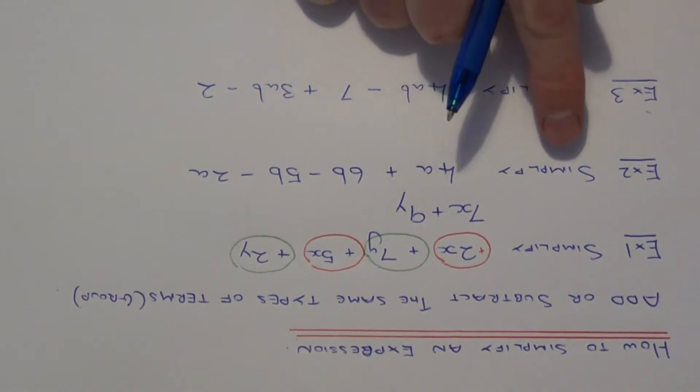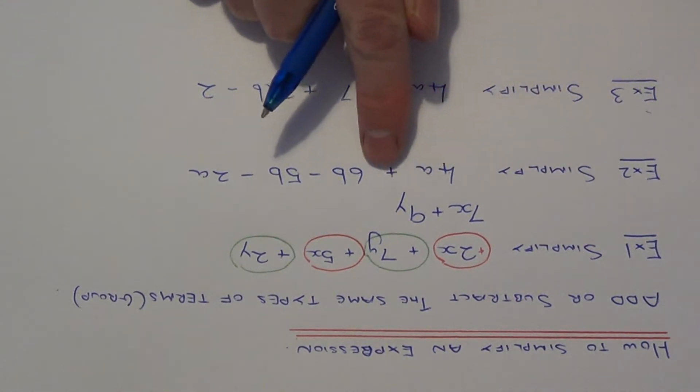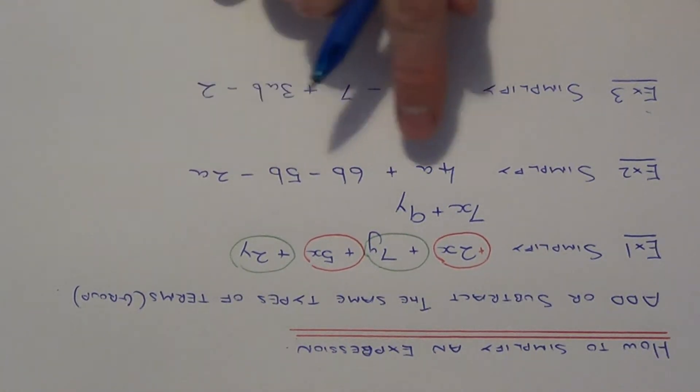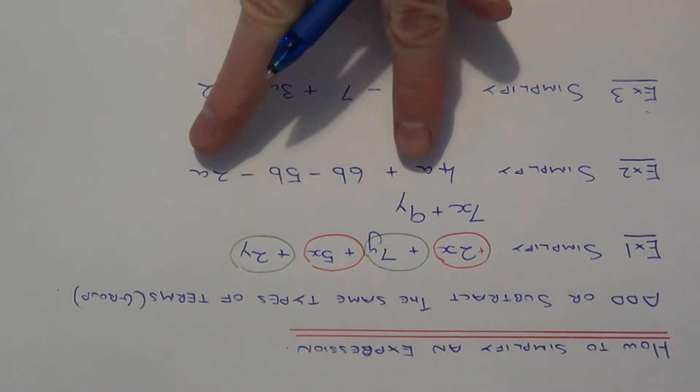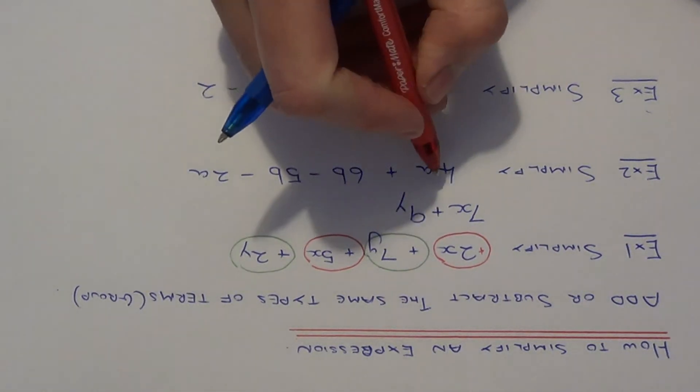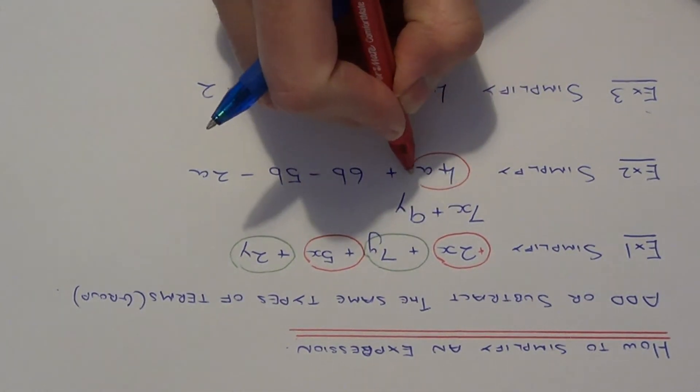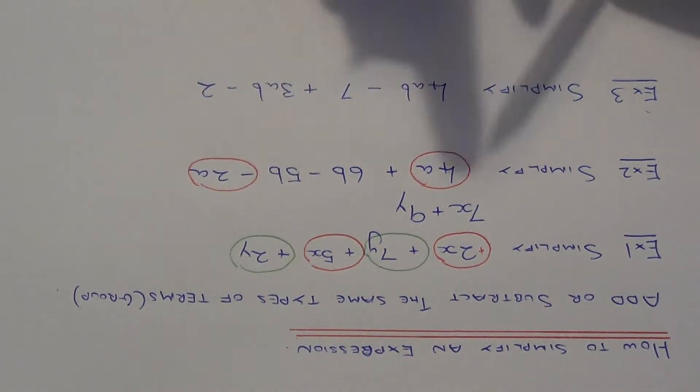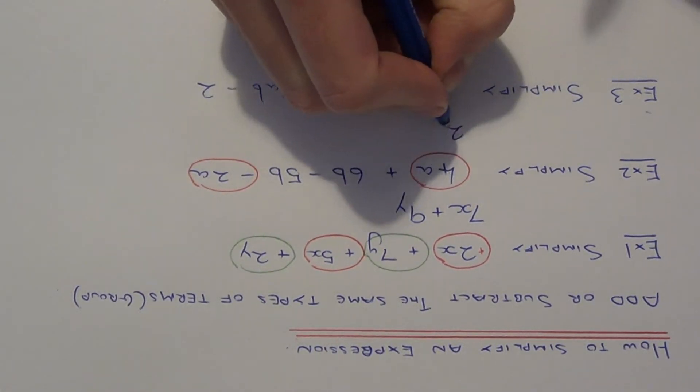So example 2. Let's simplify 4a plus 6b minus 5b minus 2a. So this time we've got 4 terms again, and we've got 2a terms and 2b terms. So let's start with the a terms. We've got positive 4a minus 2a, so that gives 2a.